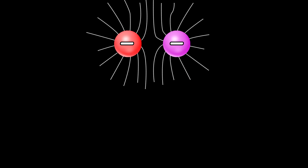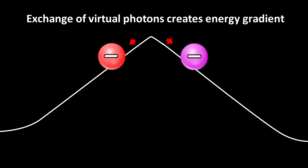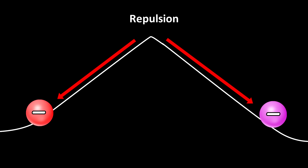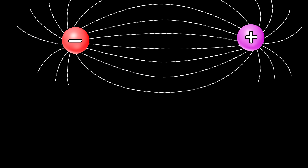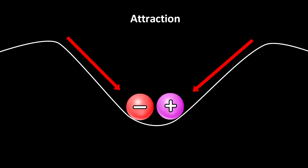Let me explain it in a less intuitive but more accurate way, using the same example of electromagnetism and the exchange of virtual photons. When two similar charges are near each other, quantum theory shows that the exchange of virtual particles creates an energy gradient between the two particles, such that there is a higher energy state between the charged particles. Since particles want to exist at their lowest energy state, they move apart. The opposite happens when dissimilar charges are near each other — a lower energy state is created between the two particles, so the charges move closer together to be at a lower energy.